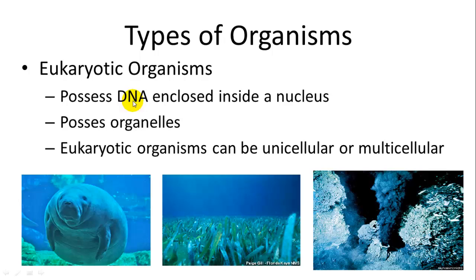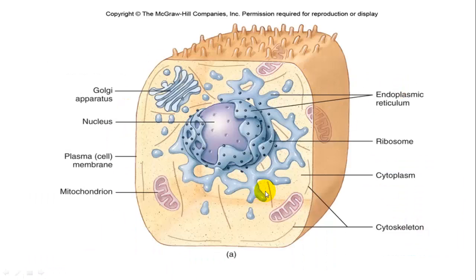Eukaryotic organisms are more complex. They have DNA enclosed inside a nucleus, and what are called organelles — little specific different parts within the cell — and they can be unicellular or multicellular. Examples include a manatee, grass, and tube worms on hydrothermal vents in the deep sea. The eukaryotic structure includes endoplasmic reticulum (rough if ribosomes are embedded, smooth if not), a Golgi apparatus which sorts and modifies proteins, a plasma membrane, mitochondria where cellular respiration takes place, and a cytoplasm and cytoskeleton.